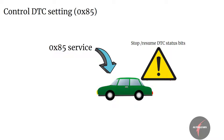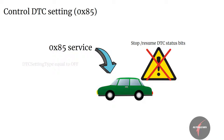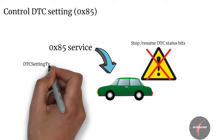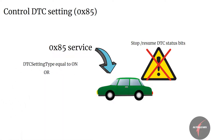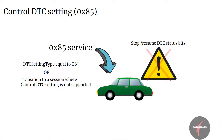When the server accepts a Control DTC Setting request with the sub-function value DTC setting type equal to off, then the server shall suspend any updates to the DTC status bits until the functionality is enabled again. The update of DTC status bit information shall continue once a Control DTC Setting request is performed with the sub-function set to on, or a transition to a session is made where the Control DTC Setting is not supported.